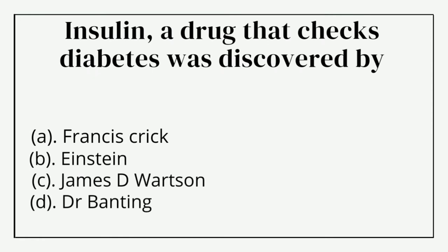Insulin, a drug that checks diabetes, was discovered by — option A: Francis Crick, option B: Einstein, option C: James D. Watson, option D: Dr. Banting. The correct answer is option D: Dr. Banting.